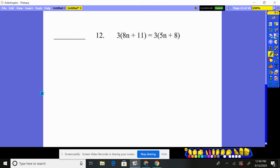Number 12. We're going to have to do some distributing through. So I'm going to distribute the 3 through to both pieces and on that side also. That's going to give me 24n plus 33 equals 15n plus 24.